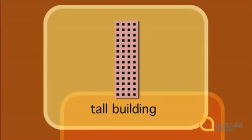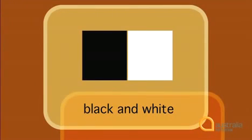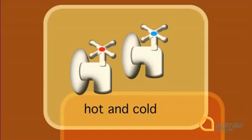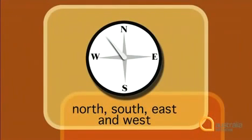Collocations are not just about the words that go together, but also the order they go in. We always say 'black and white', not 'white and black'. We say 'salt and pepper' and 'hot and cold'. Another important collocation is the way we say directions — English speakers always say north, south, east and west in that order.